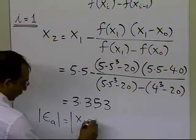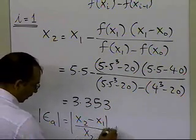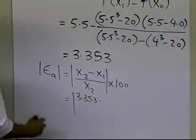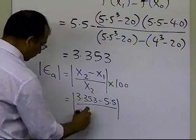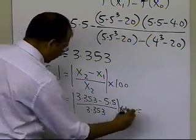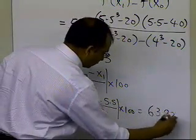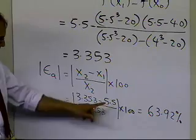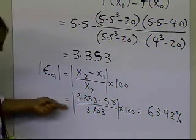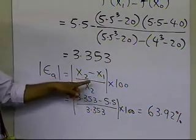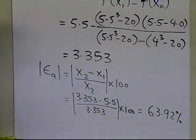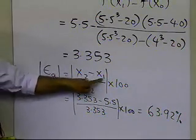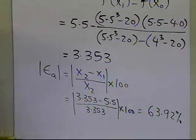The absolute relative approximate error is: |x2 minus x1| divided by x2, times 100. The present approximation is 3.353, the previous approximation x1 is 5.5, divided by 3.353, times 100 — and this turns out to be 63.92%. Note that the previous approximation used is 5.5, because x0 was assigned 4 and x1 was assigned 5.5. You cannot pick and choose, because in a loop the formula uses the current approximation at index i+1 and the previous at i-1.